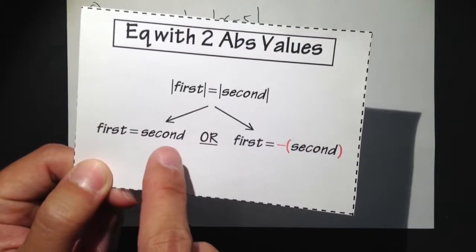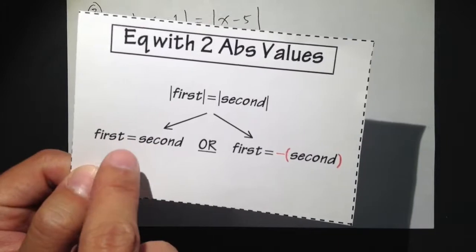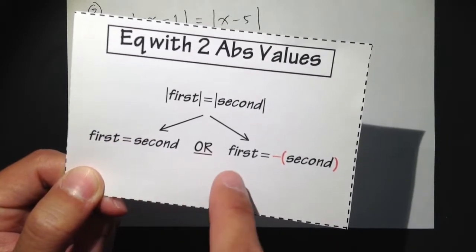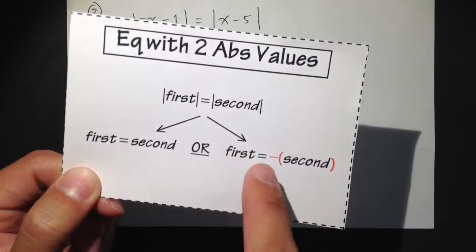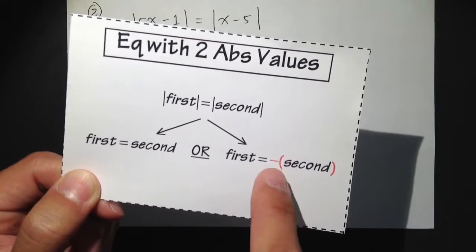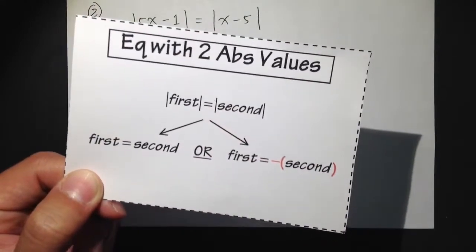So just take out the absolute value for the first situation, or the second part is you will have to solve first is equal to the negative of the second absolute value.